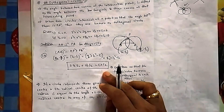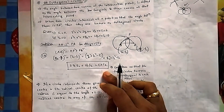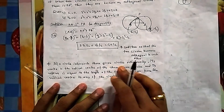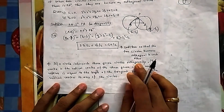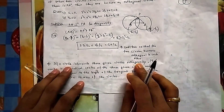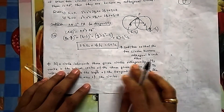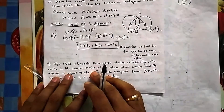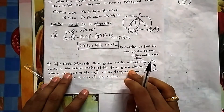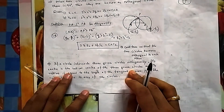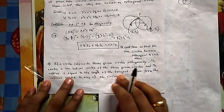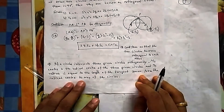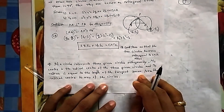If a circle intersects three circles orthogonally, then its center is the radical center of the three given circles, and its radius is equal to the length of the tangent drawn from the radical center to any of those circles.